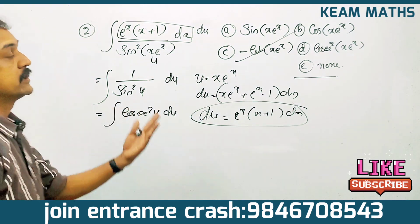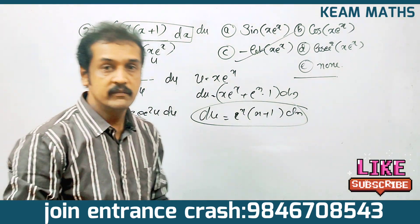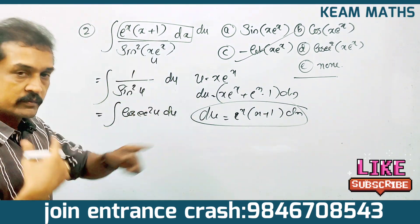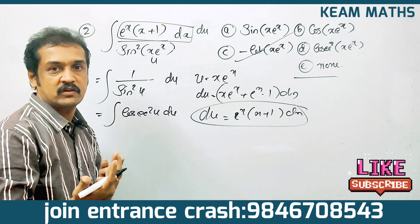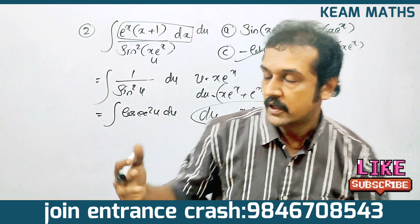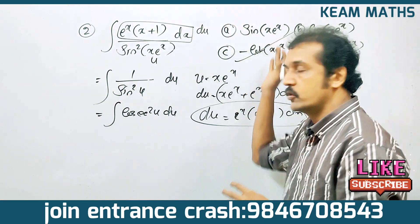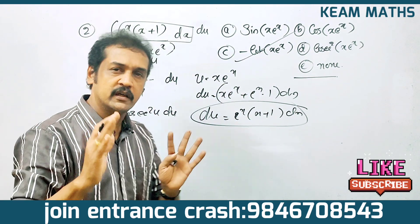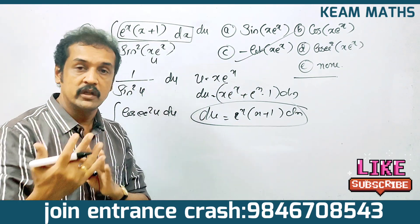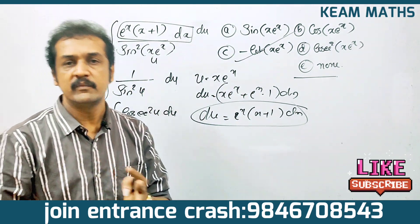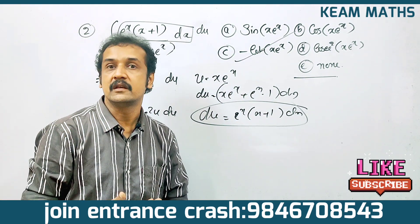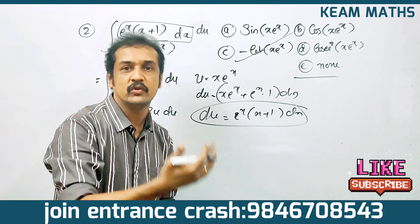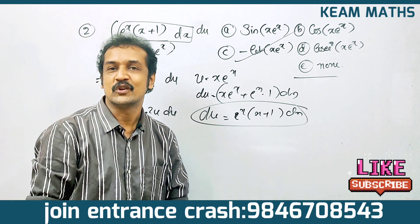Now the integral becomes integral of 1 by sin²(u) du, which is integral of cosec²(u) du. That gives minus cot(u), substituting back u equal to x · e^x. So the answer is minus cot(x · e^x) plus c.